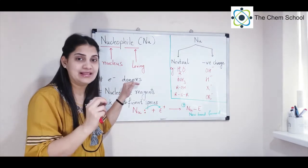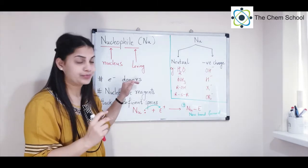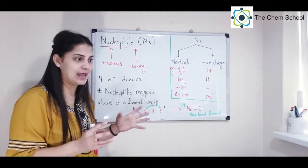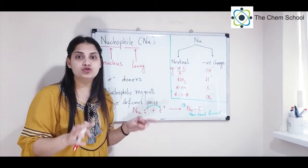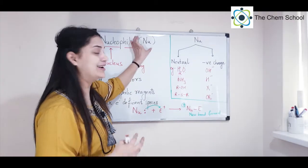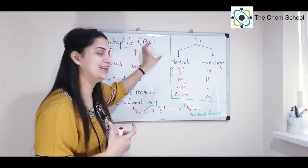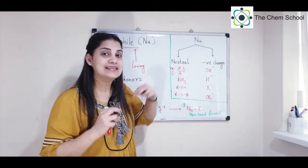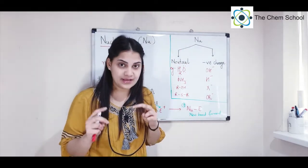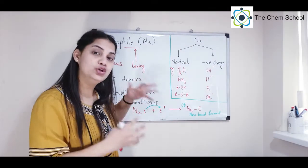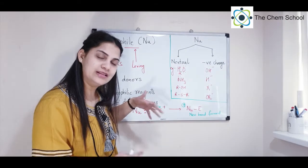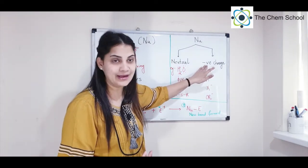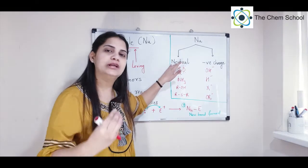Nucleophiles — written as Nu — are electron donors and can be broadly classified into two types: neutral nucleophiles or negatively charged nucleophiles.